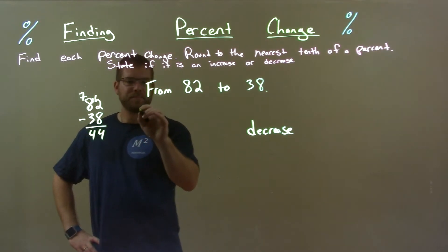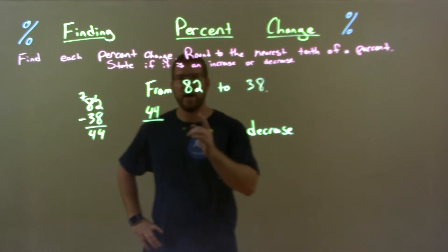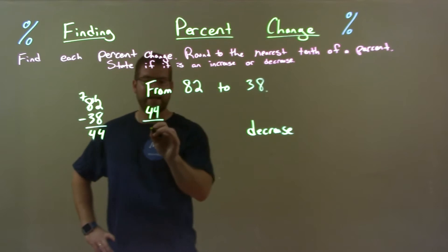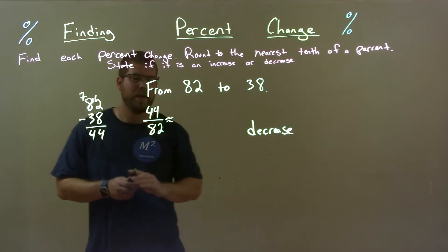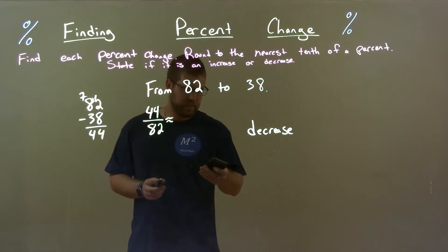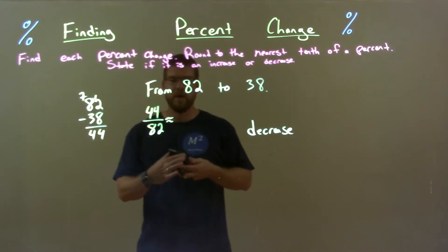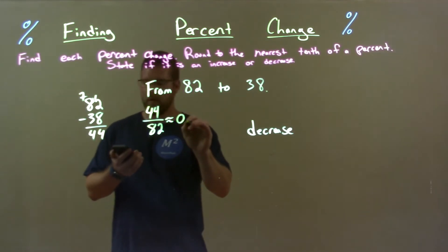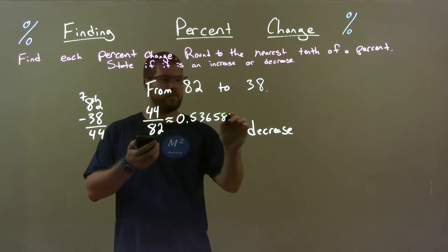So we have 44 right here, and we have to divide that by the first number, 82. So when we divide 44 by 82, we approximately get, let me use my calculator here. 44 divided by 82, we get approximately 0.536585.